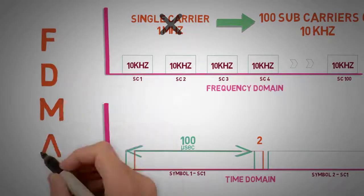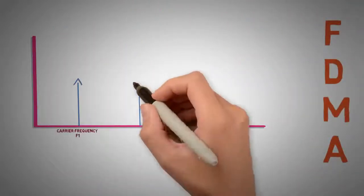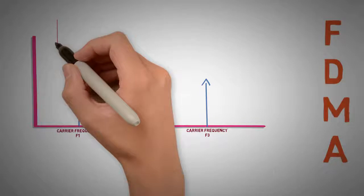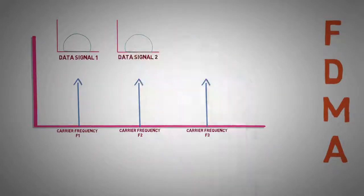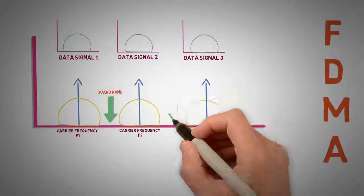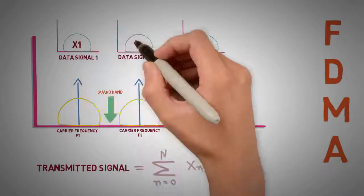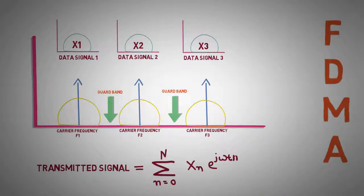This concept is used in FDMA, which uses slowly modulating sub-carriers of higher symbol duration. As these sub-carriers are modulated with data, they gain bandwidth centered around the sub-carrier's frequencies. Guard bands are used to separate them in frequency domain. We can represent this transmitted signal in the equation form as shown here, where summation of individual symbol multiplied with different carrier frequencies and transmitted at radio frequencies.